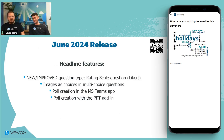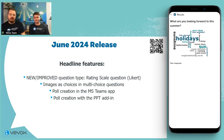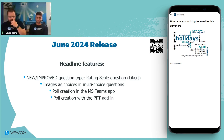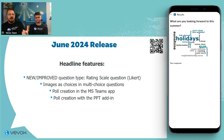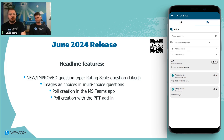That takes us on to the latest release. The key headline features include a new and improved question type — it's kind of an improvement on the old star rating question. Previously you'd just choose an item and rate it out of five stars. Now it's been turned into a Likert style question, which you're probably familiar with from employee feedback surveys — where there are multiple items and you go through rating each one on a scale from strongly disagree to strongly agree.